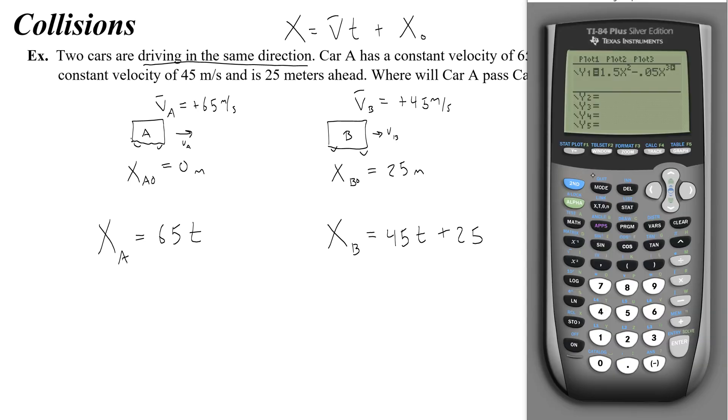Using your graphing calculator for this is really easy. You go to y equals. You clear anything that's there. And I'm going to put in 65x. It's kind of confusing using x for t and y for x. We'll look at that in a second. Then 45x plus 25. Okay, I graph it.